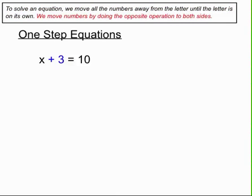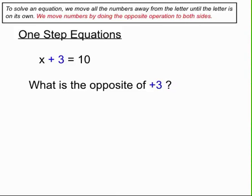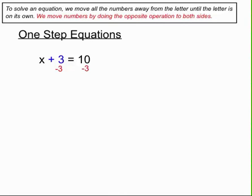We move numbers by doing the opposite operation to both sides. So we ask: what is the opposite of adding 3? The opposite of adding 3 is minusing 3, and we do that subtraction of 3 on both sides of the equation. On the left-hand side, the plus 3 and the minus 3 cancel each other out, leaving just the letter on its own. On the right-hand side, 10 minus 3 equals 7. So x plus 3 equals 10 has a solution of x equals 7.